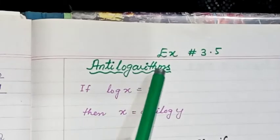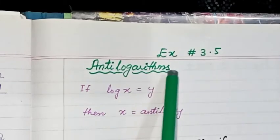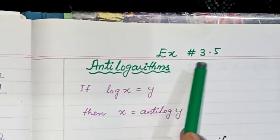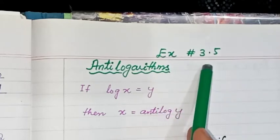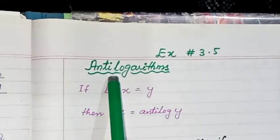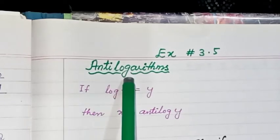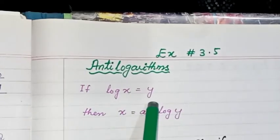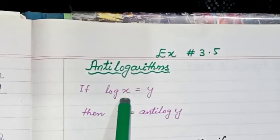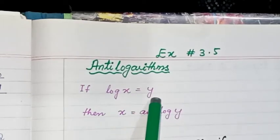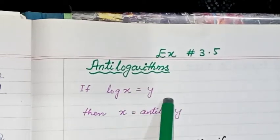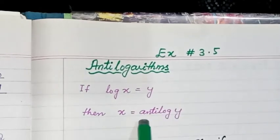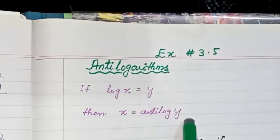Bismillah ar-Rahman ar-Rahim. Assalamu alaikum. In this video, we are going to start exercise 3.5. We have to deal with anti-logarithm. If log x is equal to y, then x is called the anti-logarithm of y and it is written as x is equal to anti-log of y.